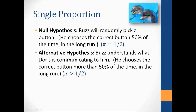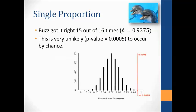If you remember way back when, the first week of class, we talked about a single proportion, and the example we used was Buzz and Doris, and whether or not Buzz would push the correct button when the light was flashing or steady. Our null hypothesis was that Buzz will randomly pick a button — he doesn't understand the light system — so in the long run he's going to push the correct button 50% of the time. The alternative hypothesis is that Buzz understands what Doris is communicating to him, and he'll choose the correct button more than 50% of the time in the long run.